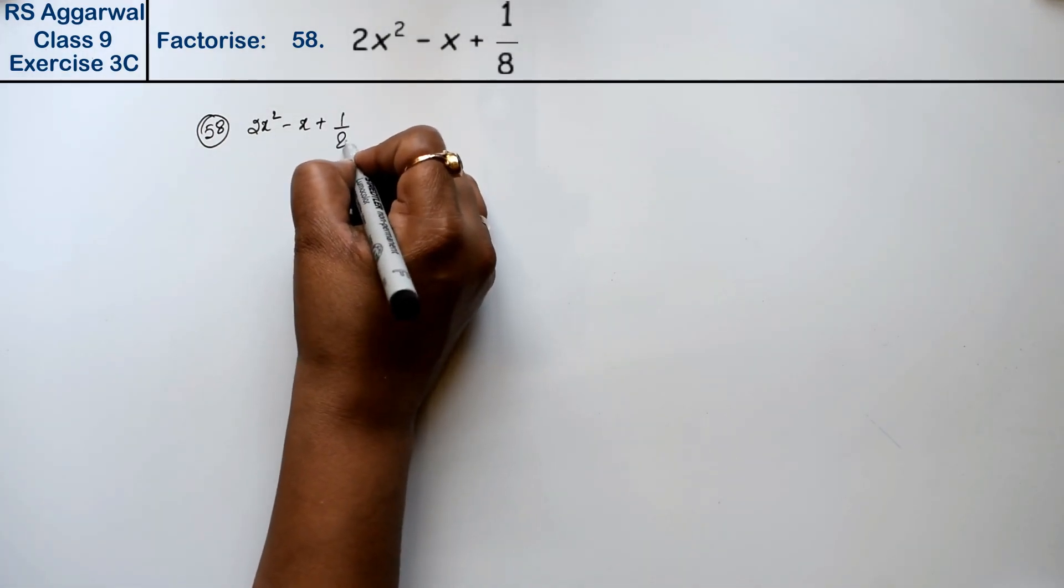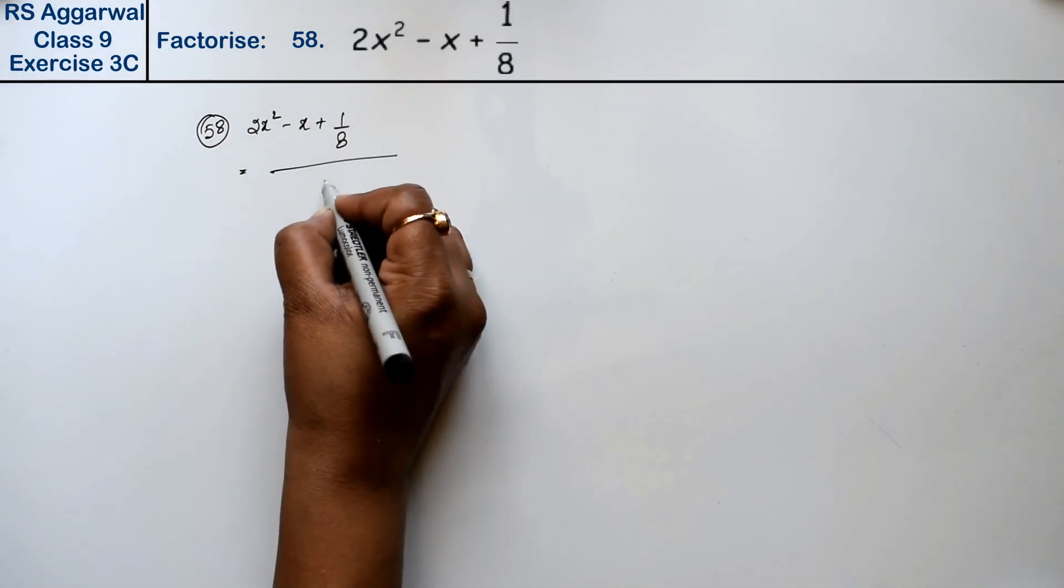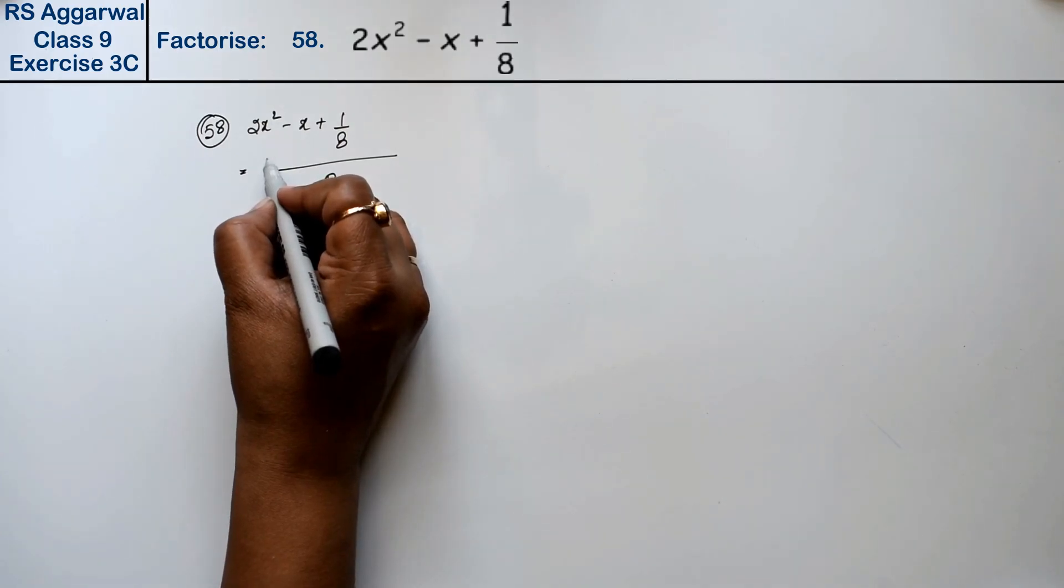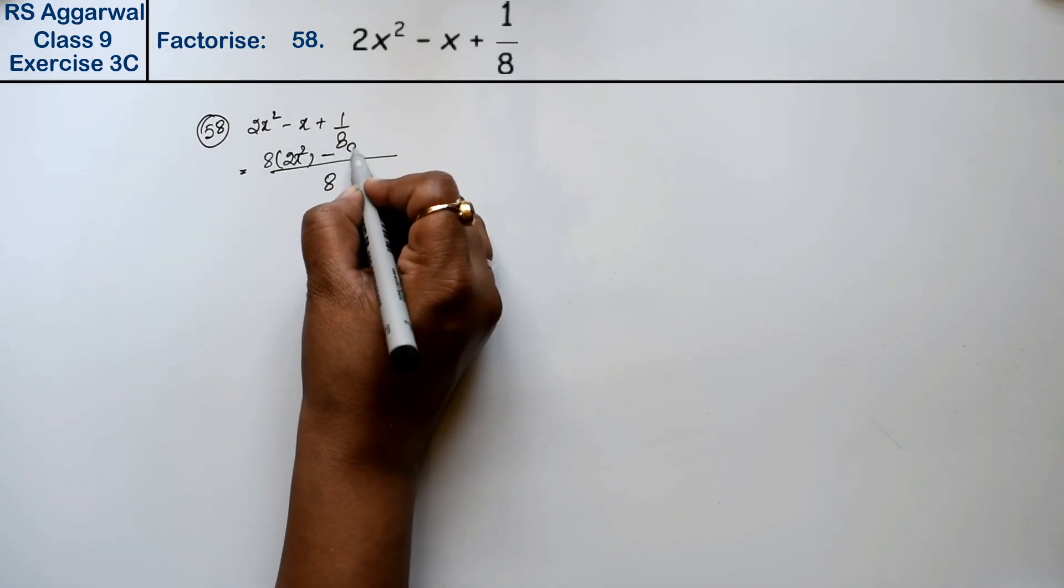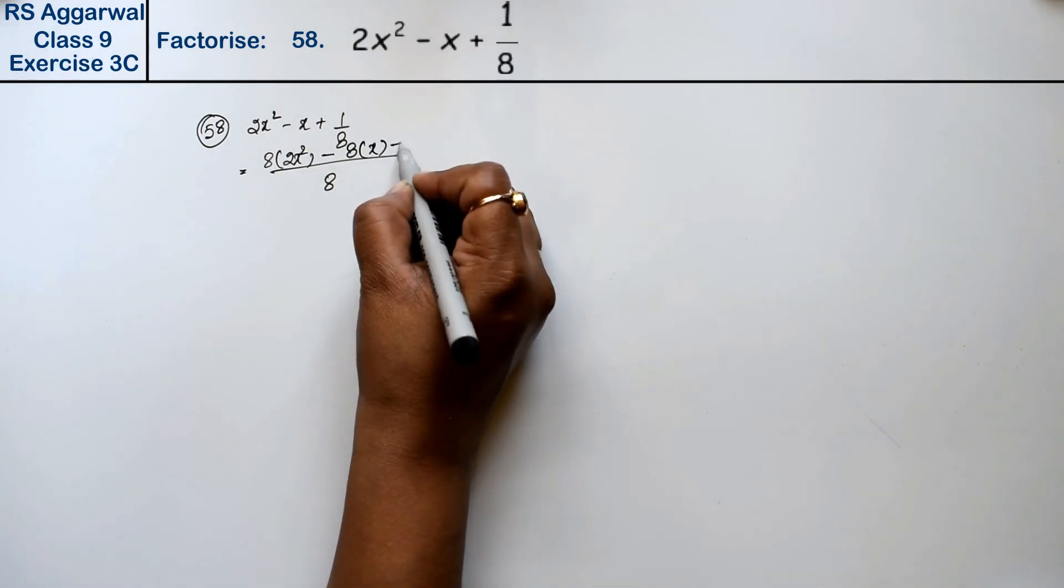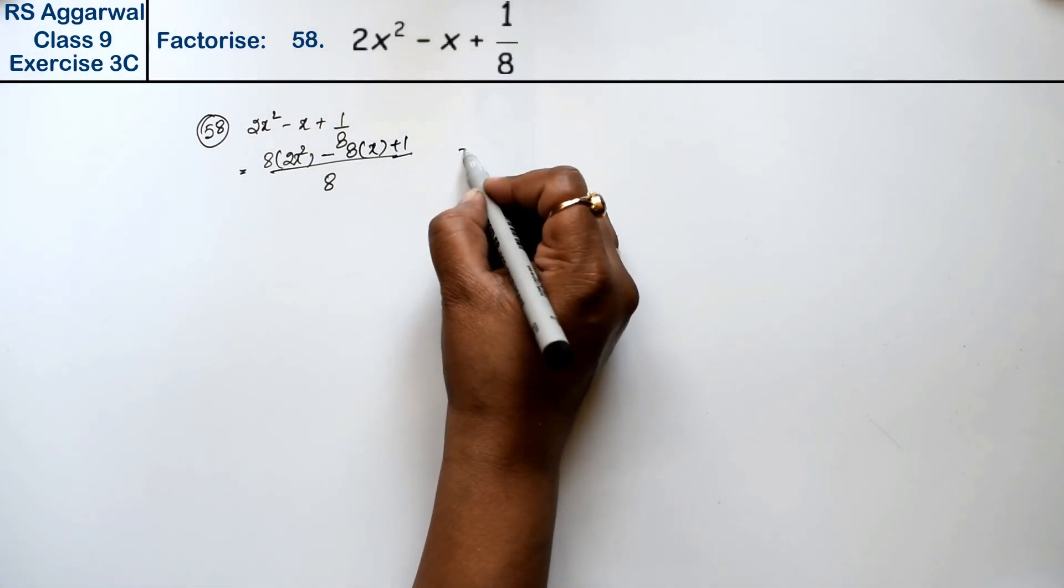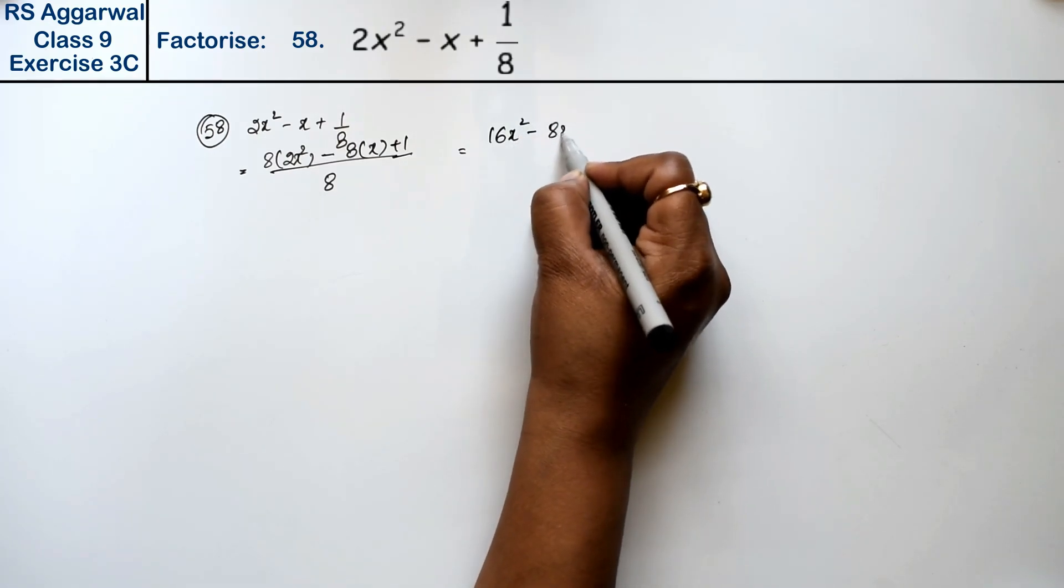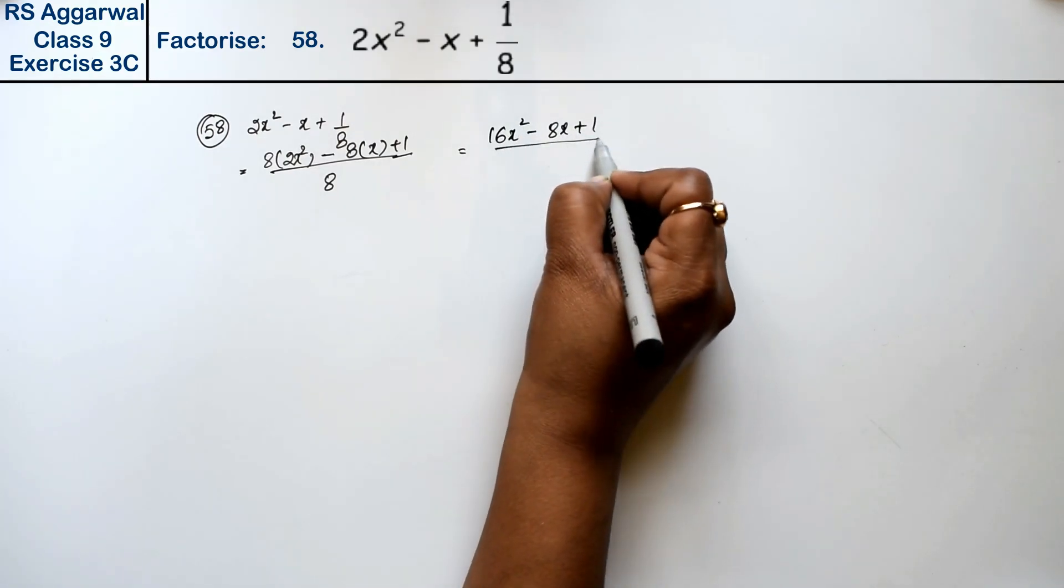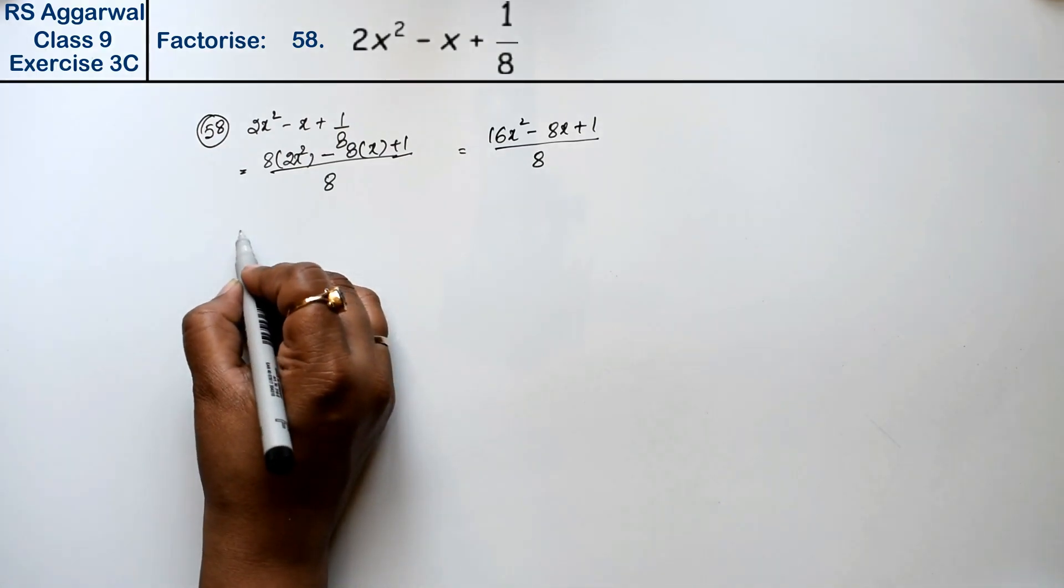Taking LCM as 8, we multiply: 8 × 2x² - 8 × x + 1, which gives 16x² - 8x + 1. So we have (16x² - 8x + 1)/8.